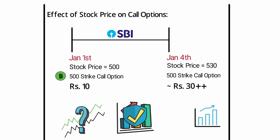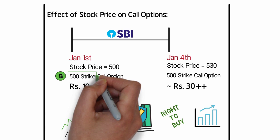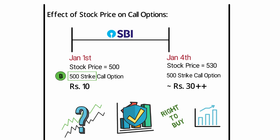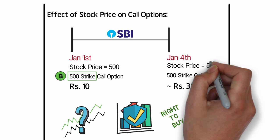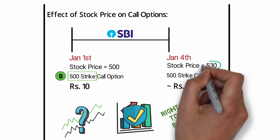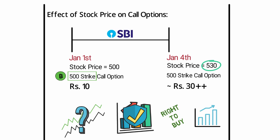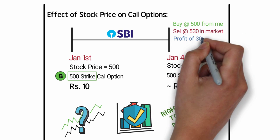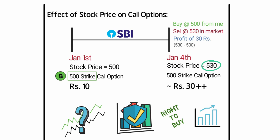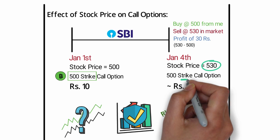But why does this happen? The call option gives you the right to buy the stock at the strike price. If the stock price stays at 530, it gives you the right to buy SBI at 500 from me and sell it in the market for 530. This means the option can make you a profit of 30 rupees, which makes the option worth at least 30 rupees.